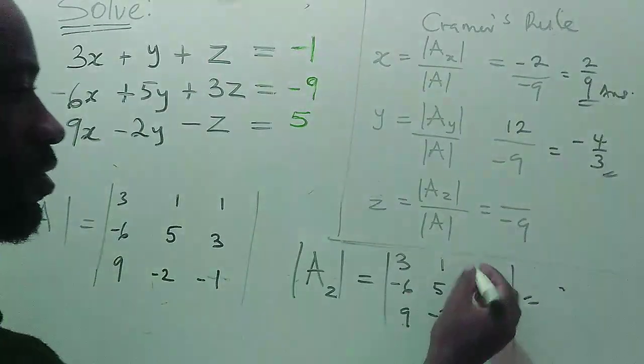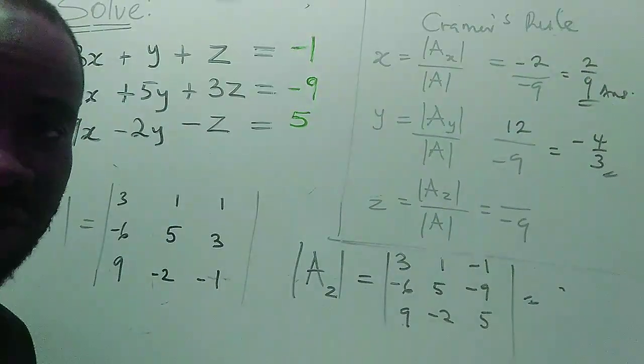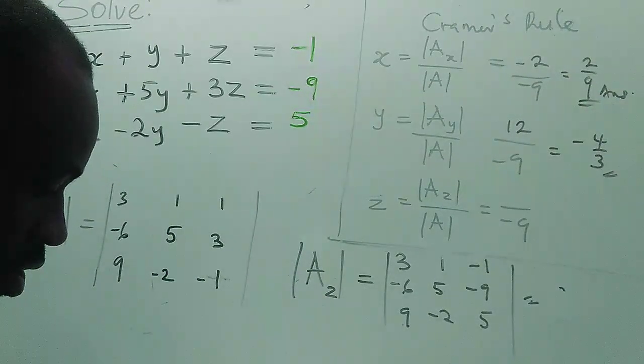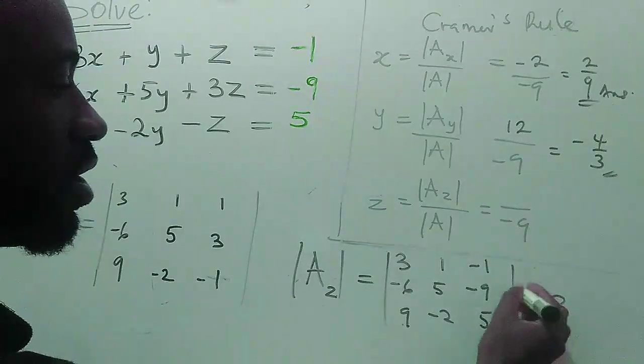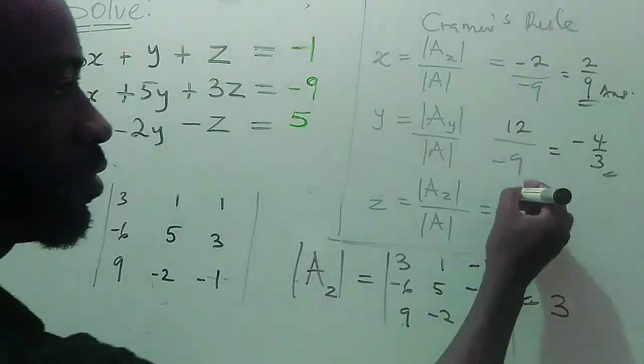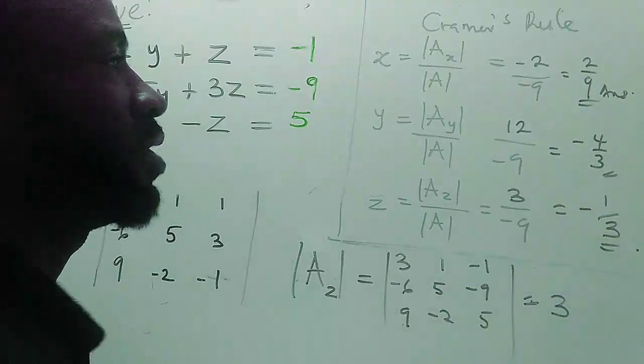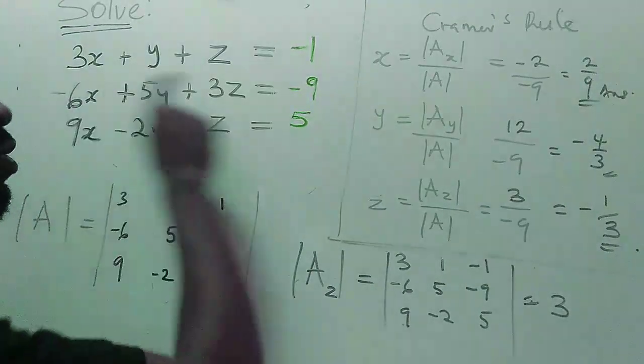We'll replace our third column with this constant on green minus one, minus nine, five. And when you find the determinant using Sarrus rule or expansion by minors, that will give you 3. And our Az is 3, so if you put your 3 here, our answer becomes minus one over three. So this is the solution to this system of equations using Cramer's rule.